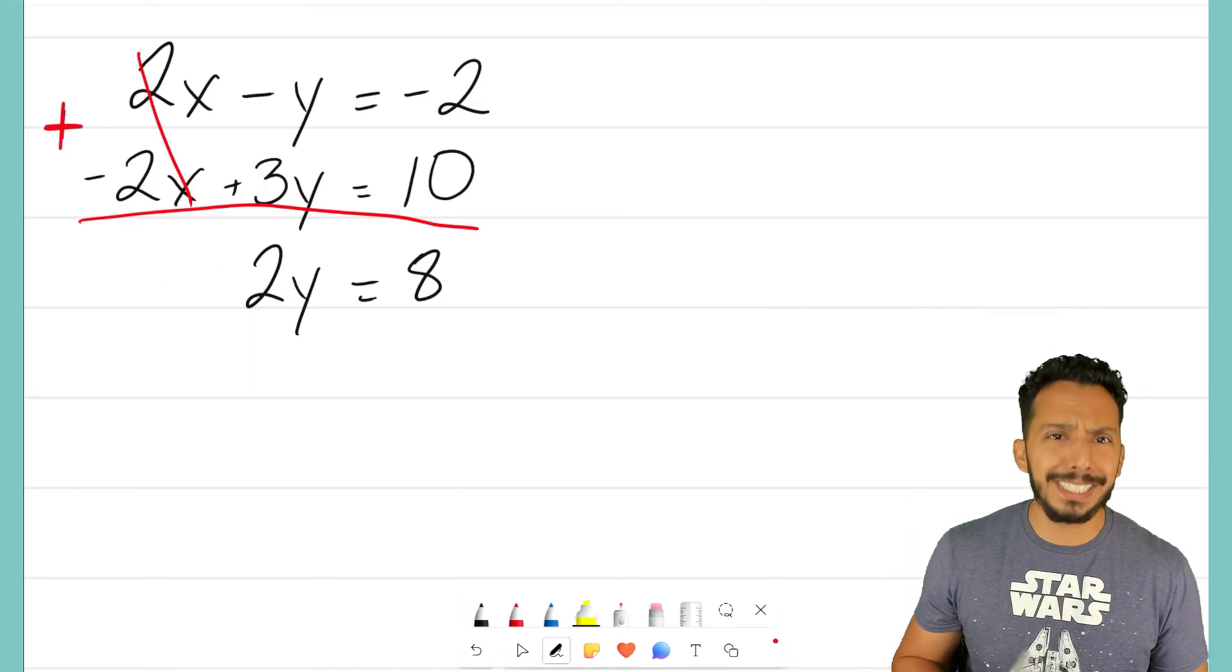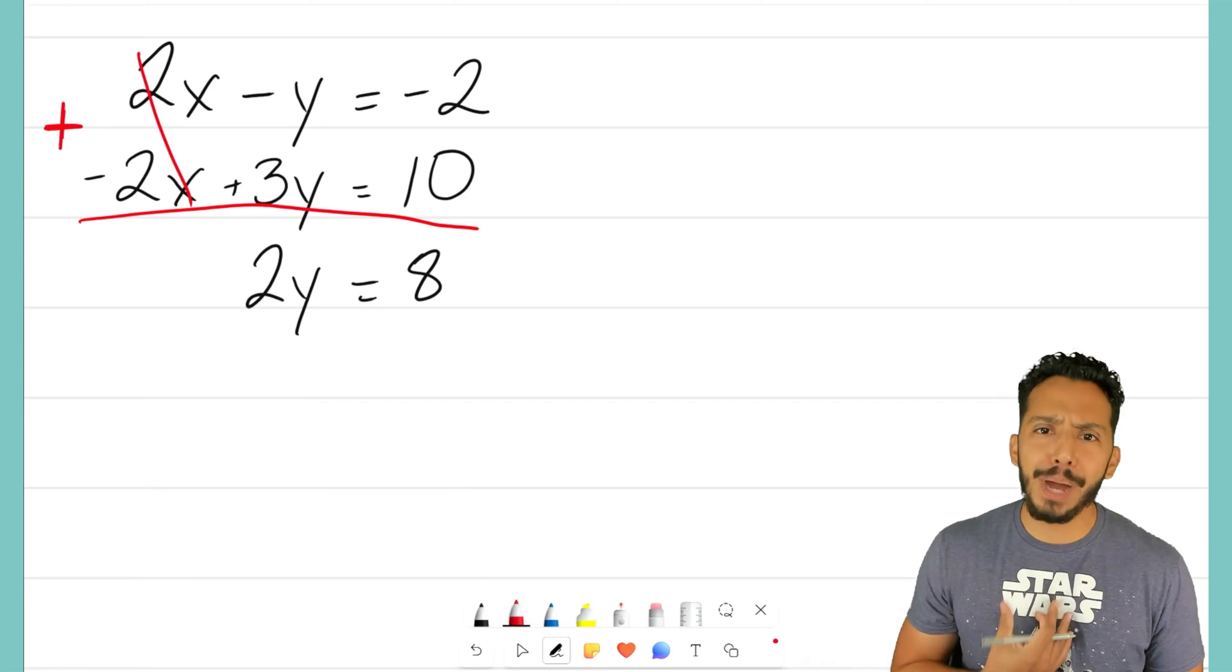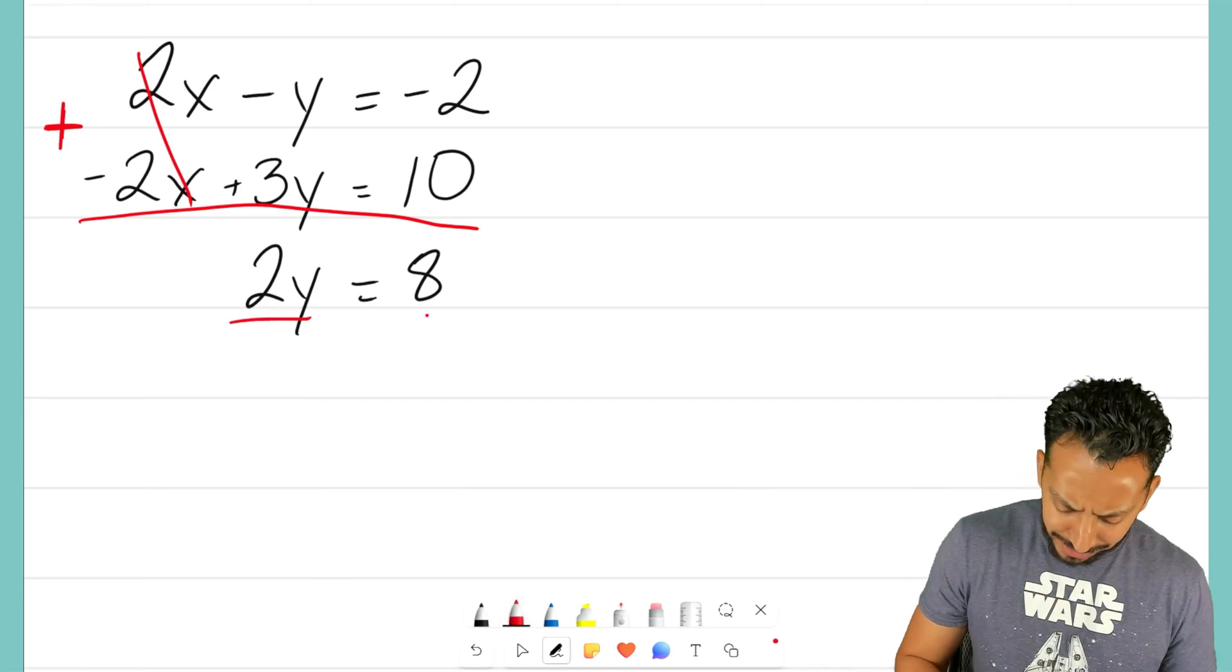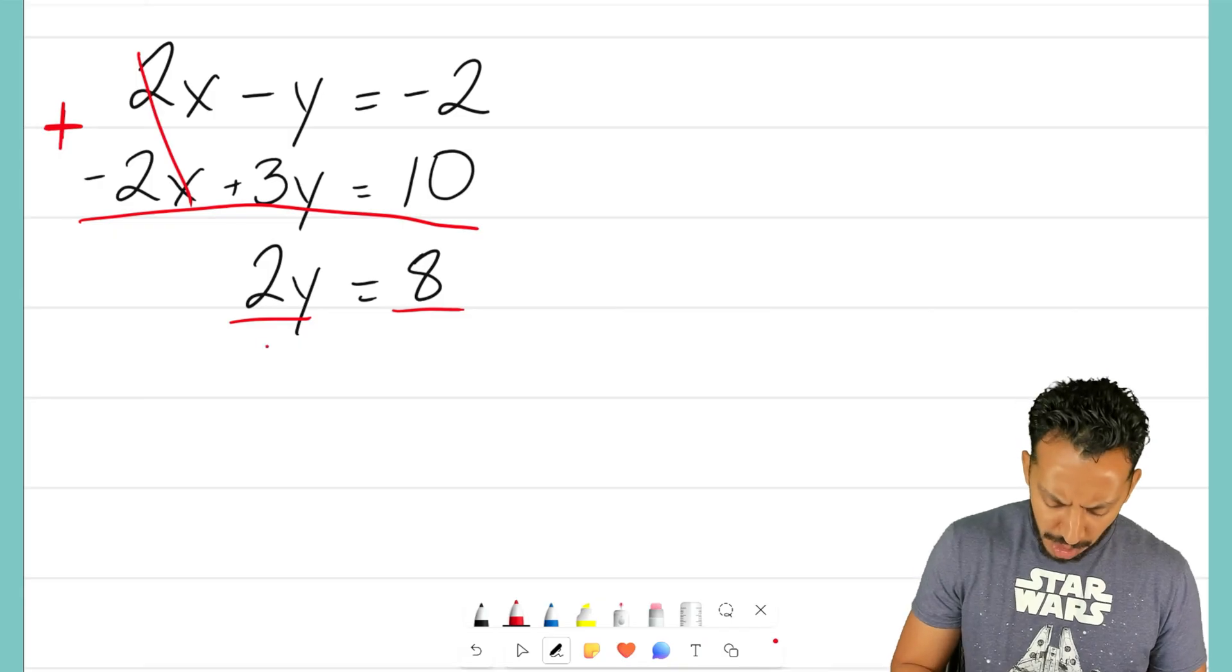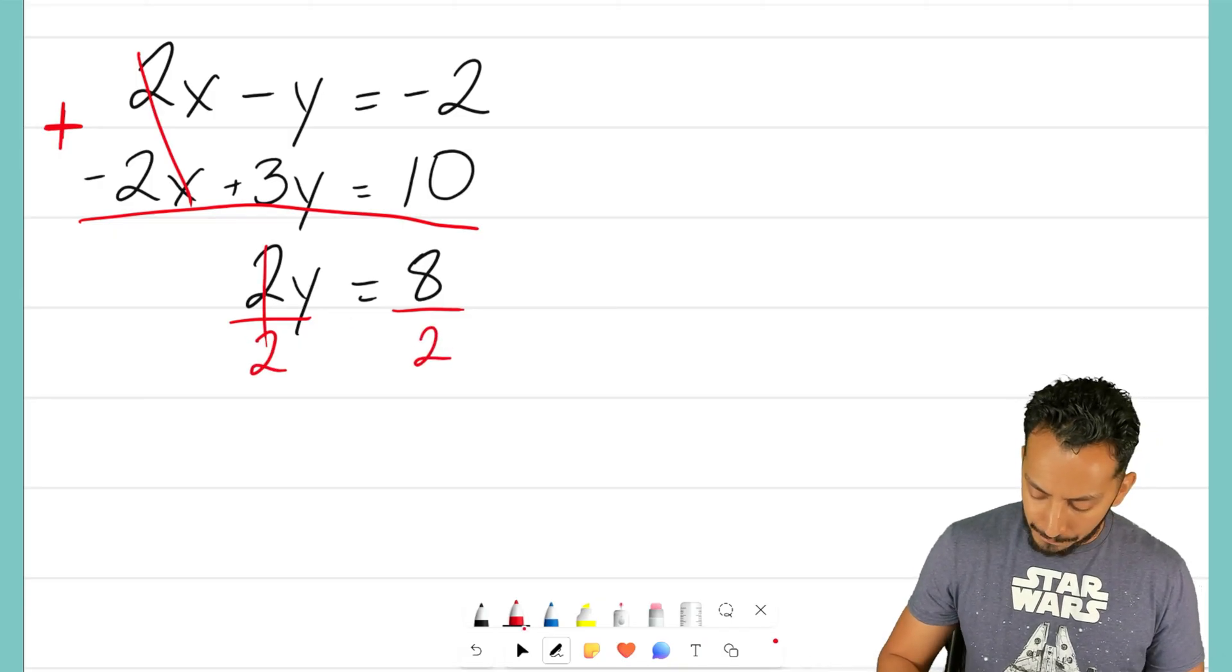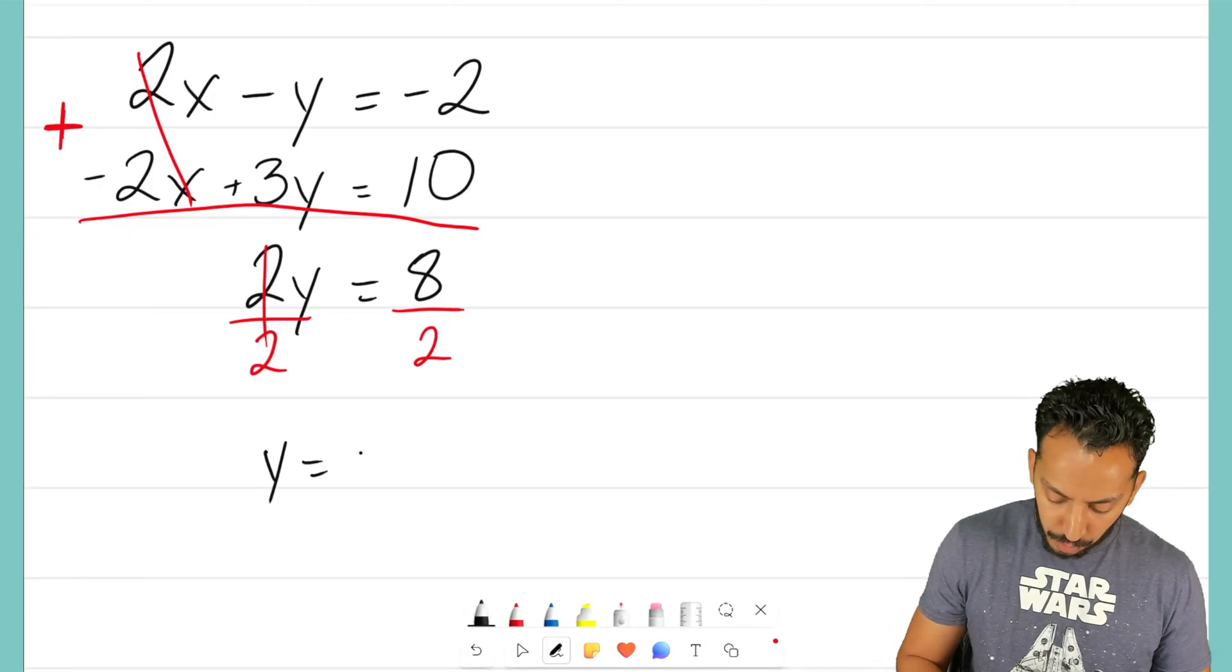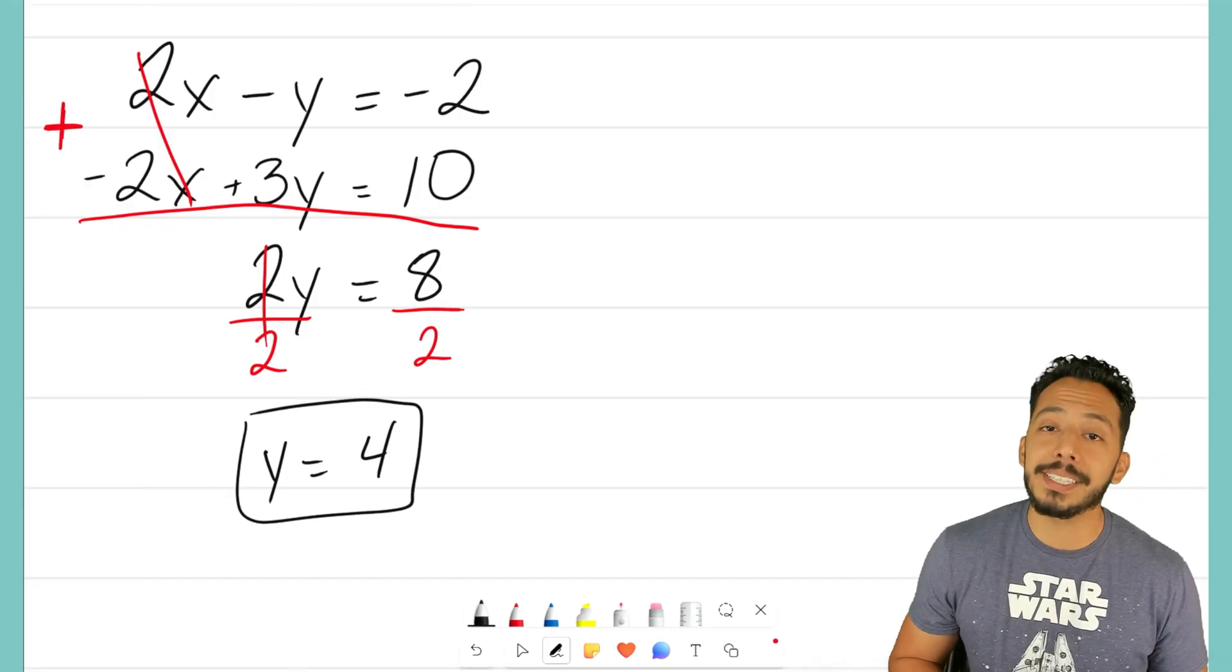I want y by itself. I want to get rid of that coefficient. That's a 2. So, we will divide both sides by 2. We end up with y equaling positive 4.